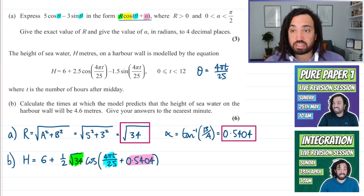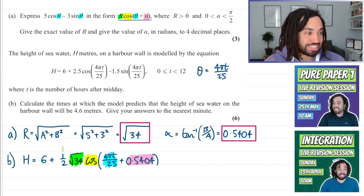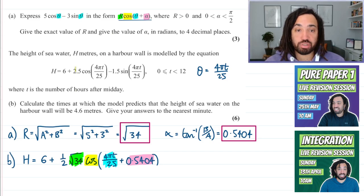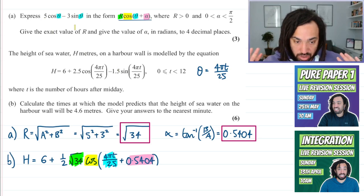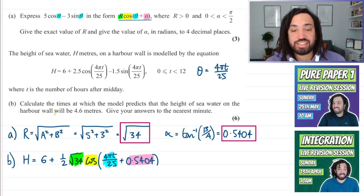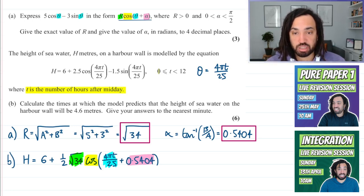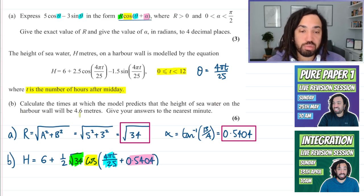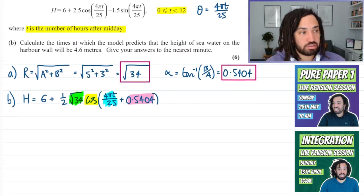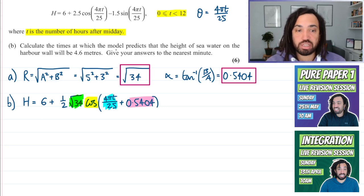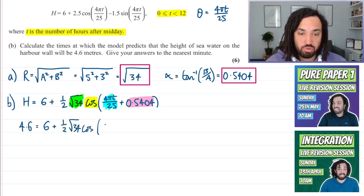There we have it. The only difference is we have to times by a half because the coefficients were 2.5 minus 1.5 rather than 5 and minus 3. We've got it in the form that we want it in. Now what are they actually asking us? Important to note t is the number of hours after midday, that can be tricky. This model is only going to work for 12 hours, from midday to midnight. It says calculate the times at which the model predicts that the height of the seawater on the harbor wall will be 4.6. So we're going to set that equal to this and then solve for the time.